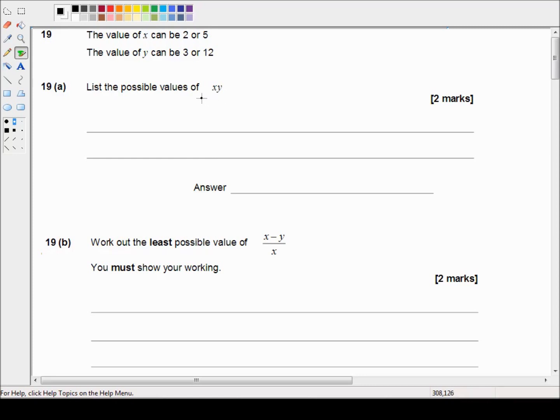So there are two possible values for x, two possible values for y, so there are two times two equals four possible answers that we can be looking for.